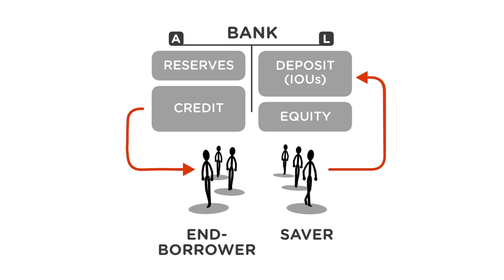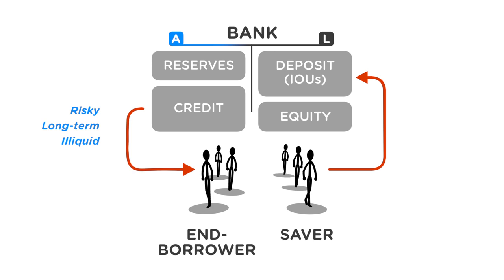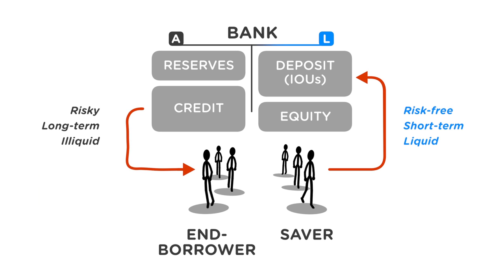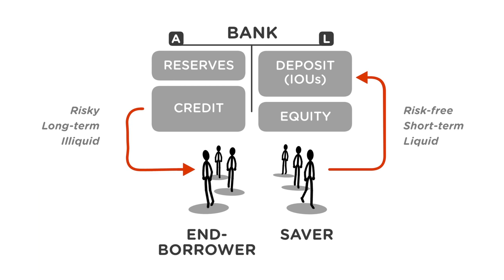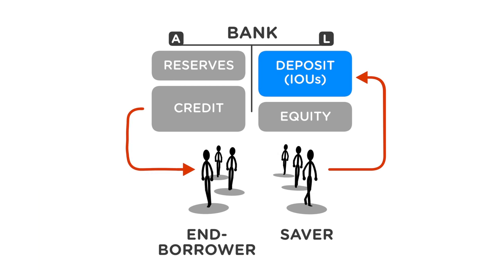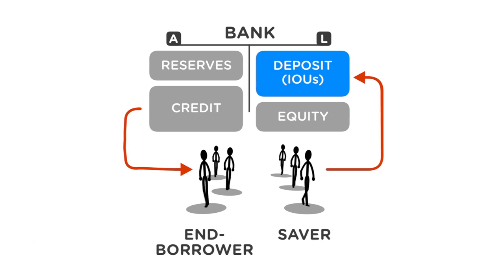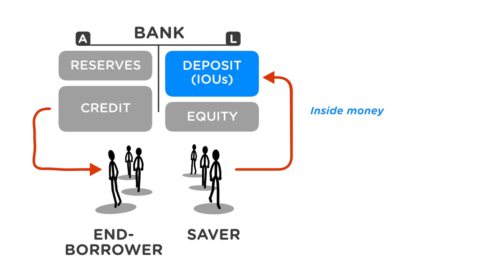Also notice that the bank grants many forms of credit and issues standardized IOUs in the form of deposits. So on the asset side there are long-term assets which are risky and illiquid, while on the liability side there are standardized deposits issued by the bank, which are much more liquid. In a sense, liquid deposits are one of the outputs of the bank's production function. These standardized deposits — IOUs — are inside money that is created by the banking sector.